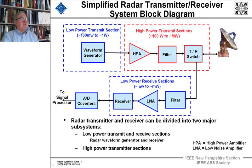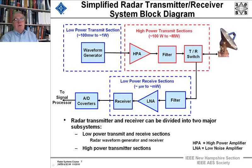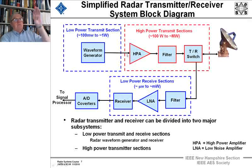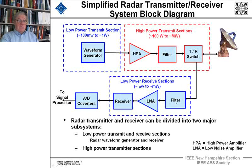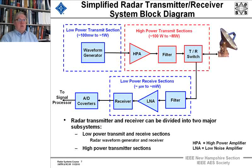The point is we've got a low-power section building up to a high-power section. Not all transmitters will have an intermediate power amplifier — most high-power tubes don't — and many times there are multiple inputs from the waveform generator into many transmitters. When we get the receive signal back, we filter it both in the transmit section and on receive, so we're receiving only the bandwidth of interest, and then we have a low-noise amplifier to keep noise as low as possible going into the receiver.